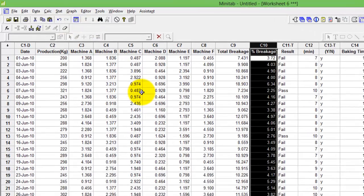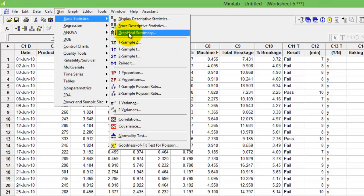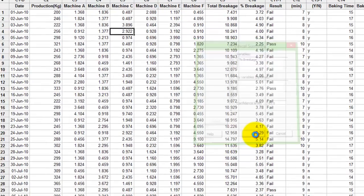I go to stats, I go to basic stats and here you go. This is where graphical summary lies. Click graphical summary, double click on C10, press OK. Simple.